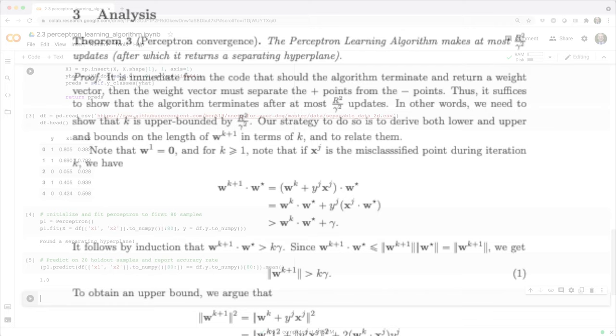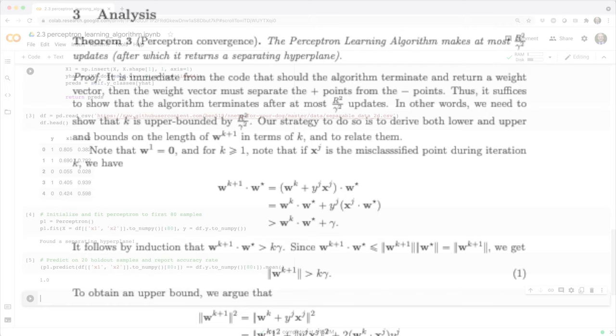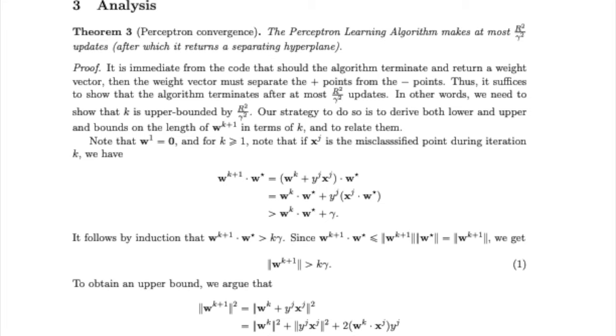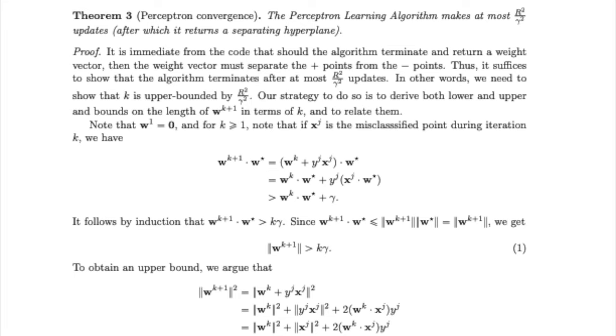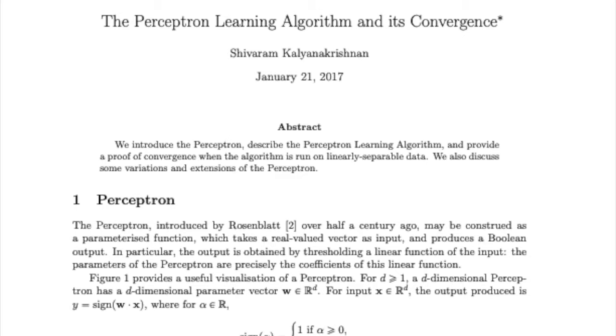So assuming the data is linearly separable, how do we know for sure that this thing converges? It turns out there's a fairly elegant, but not exactly simple, convergence proof. I debated explaining this proof in this lecture, but honestly, it's kind of hard to explain in a way that's quick and interesting. So I'm going to take the cheap way out, and refer you to this really nice write-up.